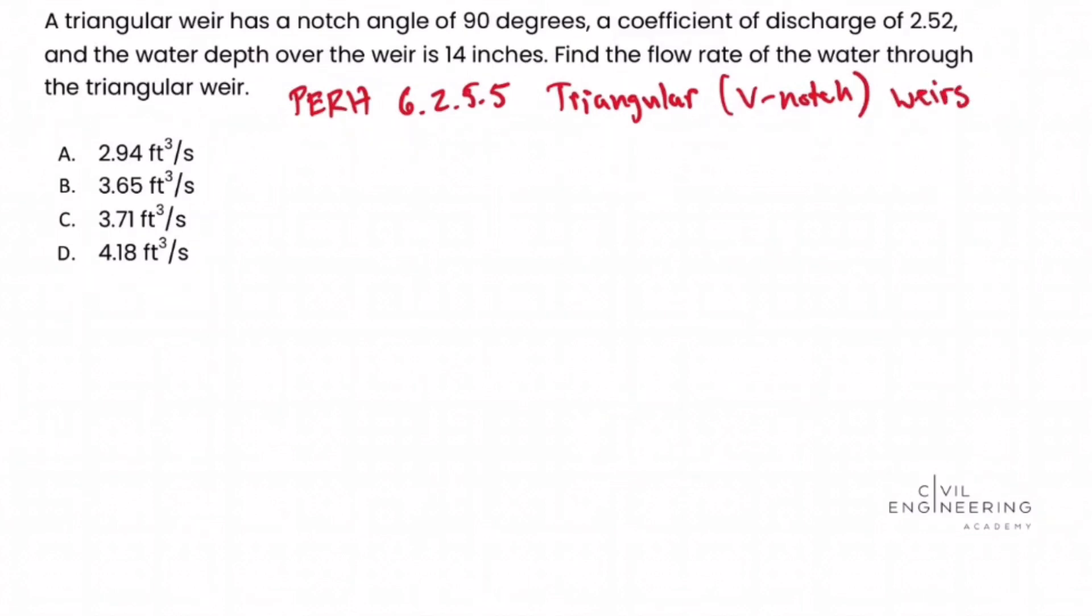So we see in this section we're given an equation specifically for the 90 degree V-notch weir. And we know we have a 90 degree V-notch weir because we're given an angle of 90 degrees in the problem statement.